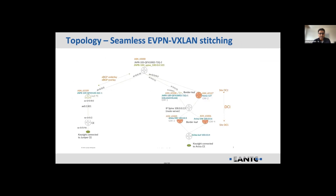Here is the quick topology for this test. We have two data centers — DC1 and DC2. In DC1, we have a leaf, Juniper 5120-32C, connecting to a spine which is the QFX 10K-72Q platform. The spine is connected to a border leaf which is QFX 10K.